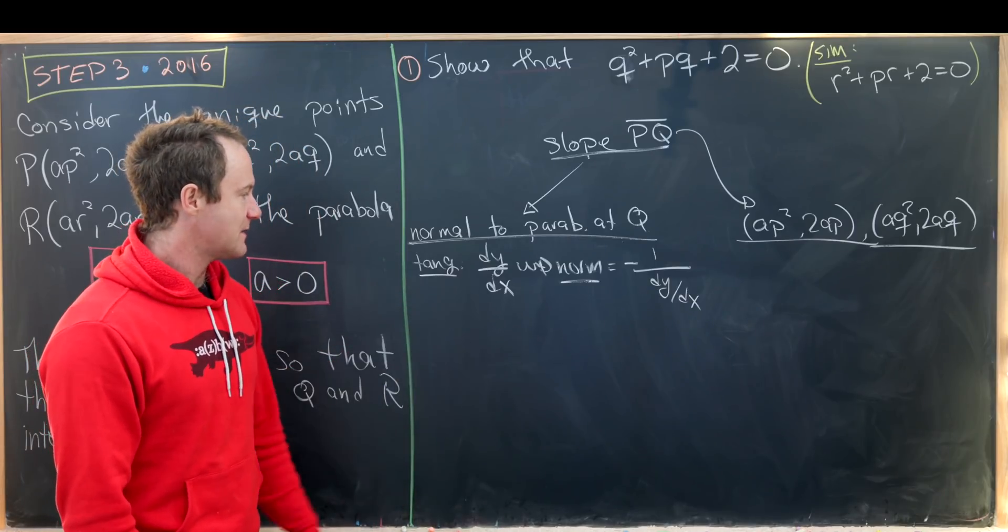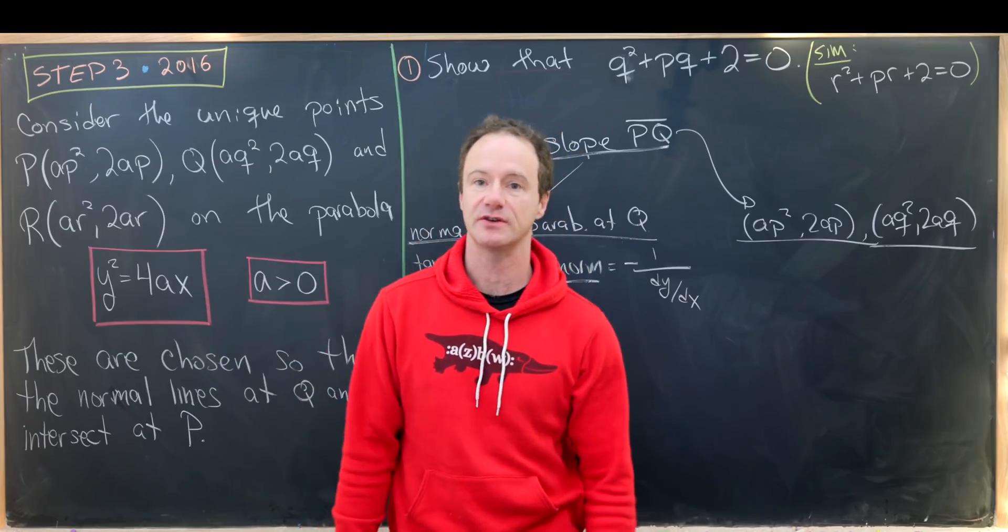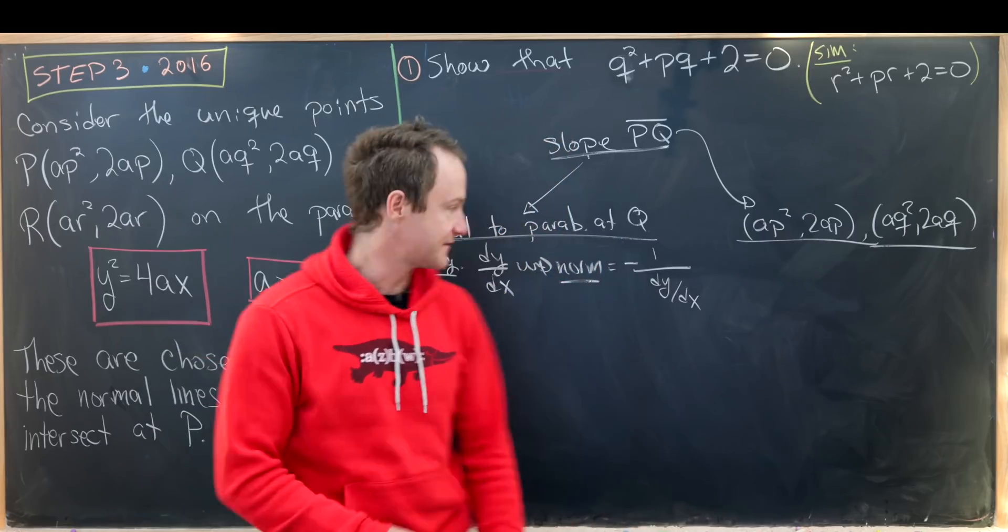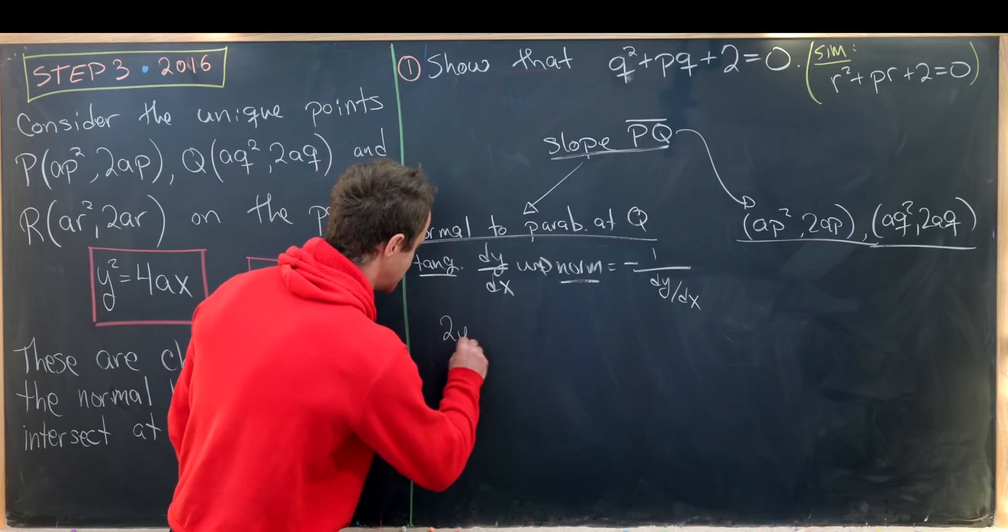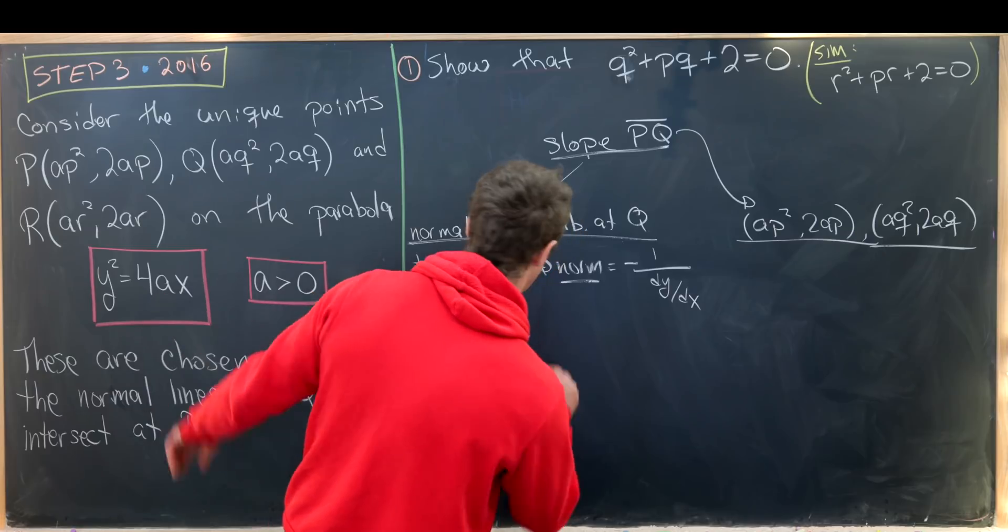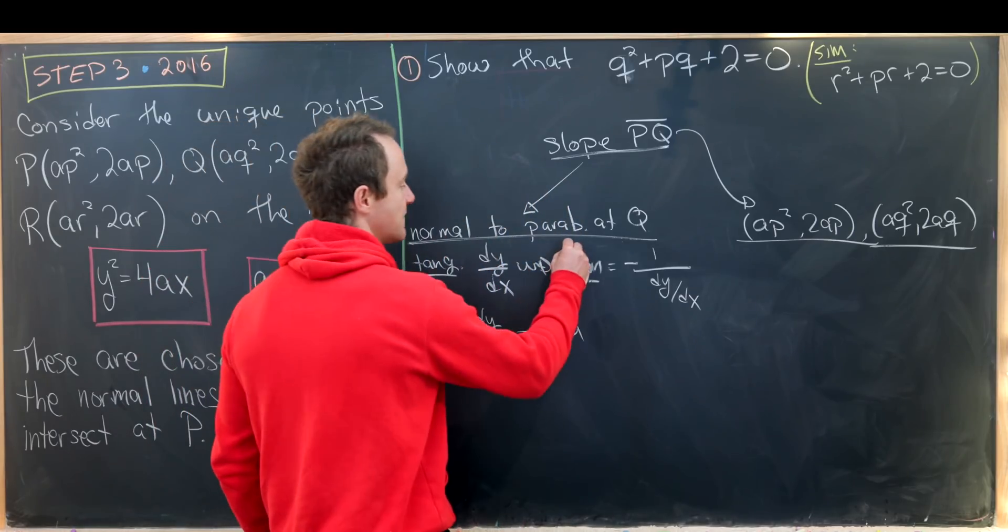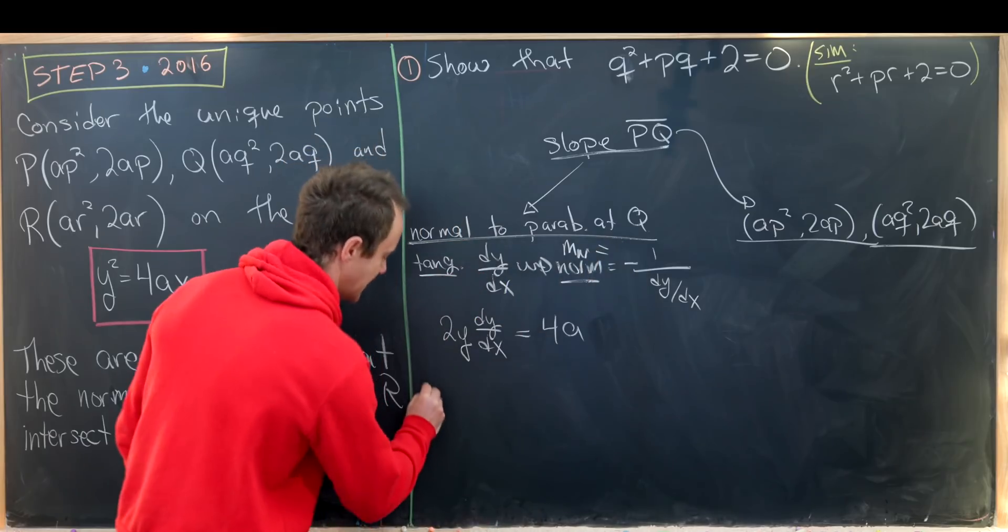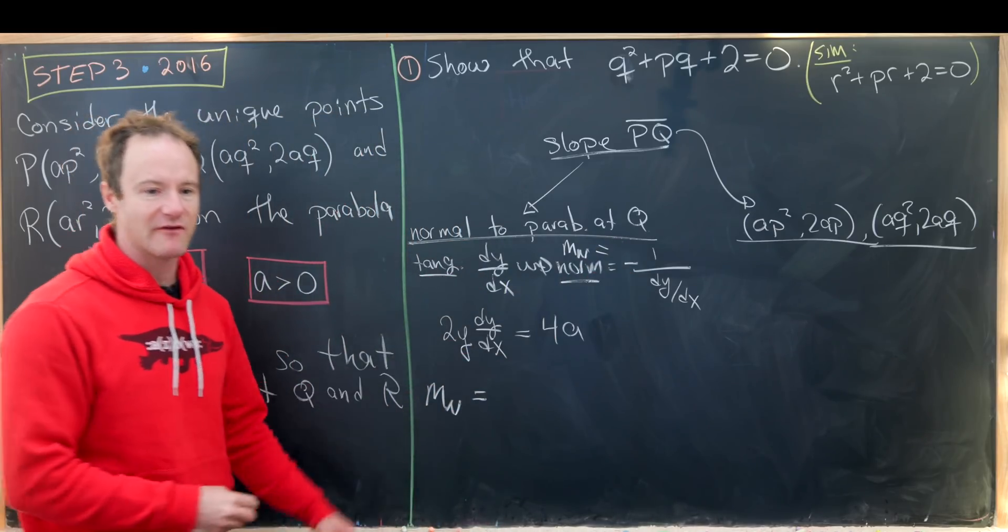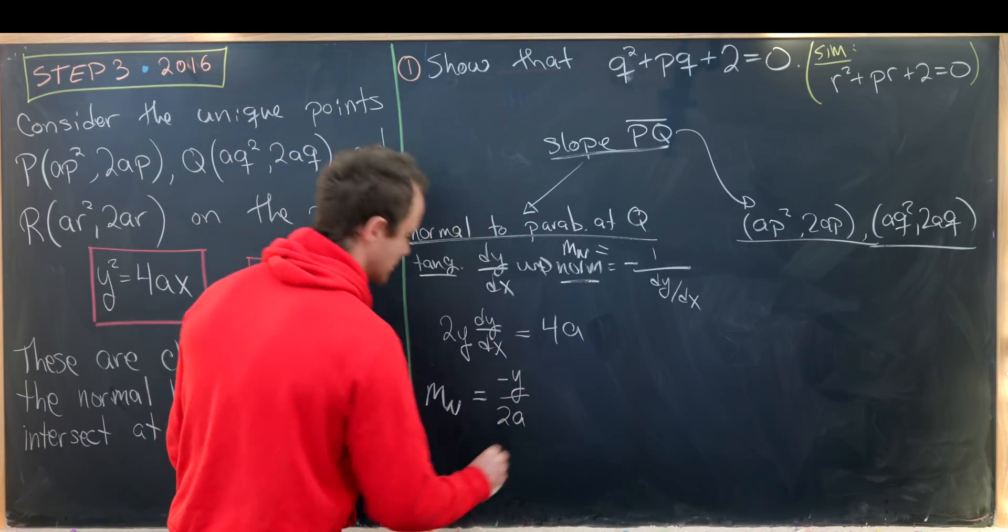In order to find a tangent line we need to look at the derivative dy/dx which means in order to find a normal line we need to look at -1 over dy/dx. Obviously this is going to be evaluated at Q. Notice we can do that using implicit differentiation. Taking the derivative implicitly with respect to x of the left hand side will give us 2y dy/dx = 4A.